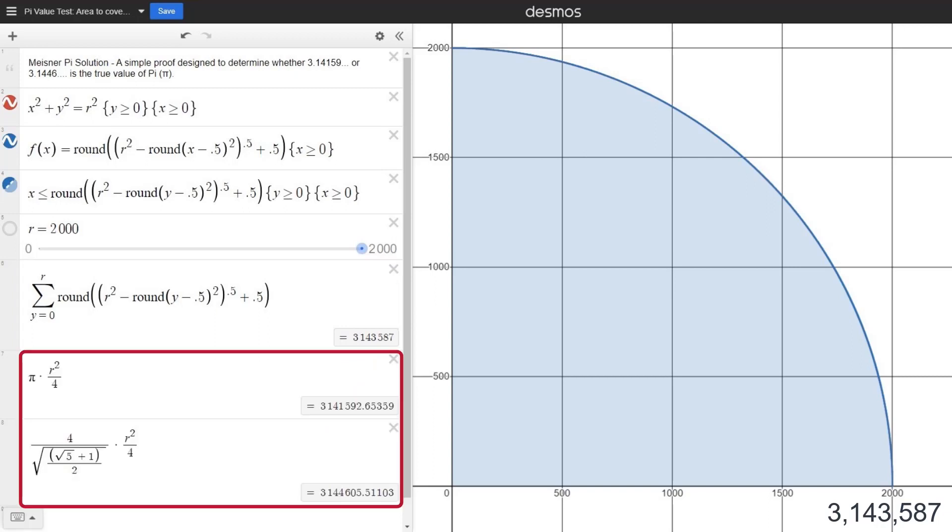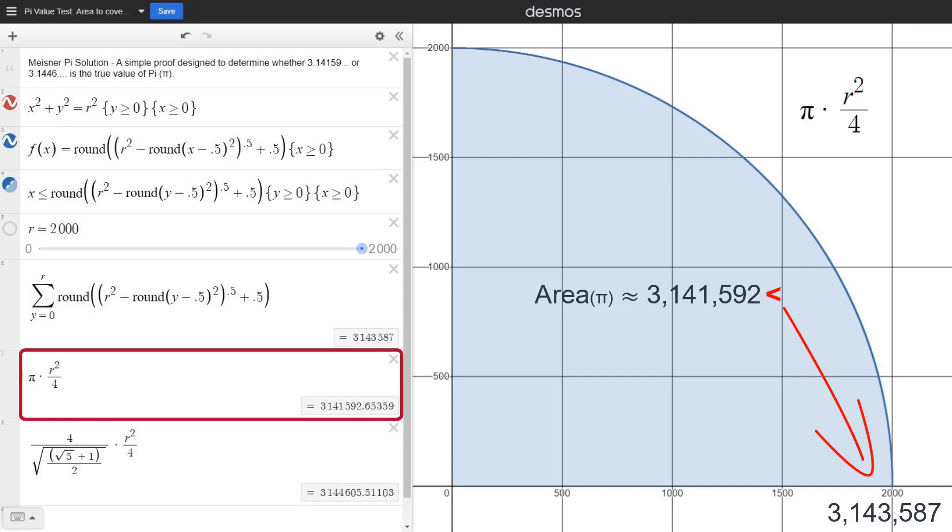Let's add two more formulas. This quarter circle's area as pi r squared over 4, with pi equals 3.141592, is slightly less than this, at about 3,141,592.